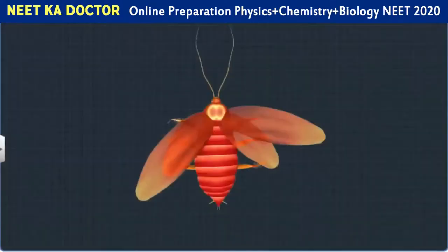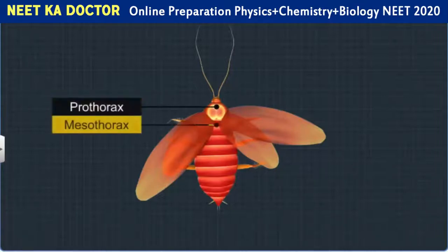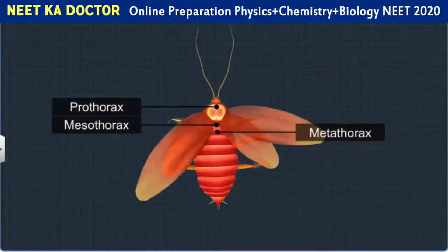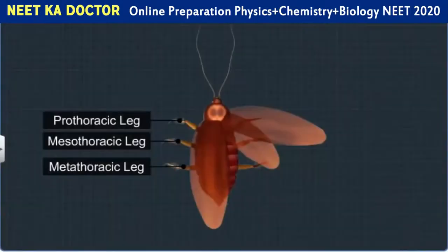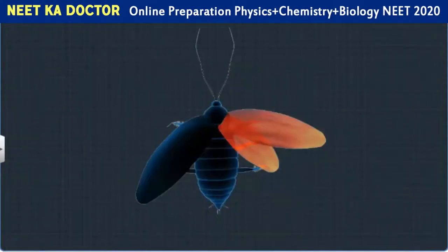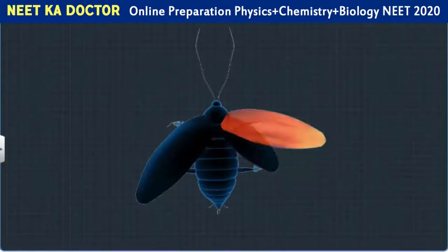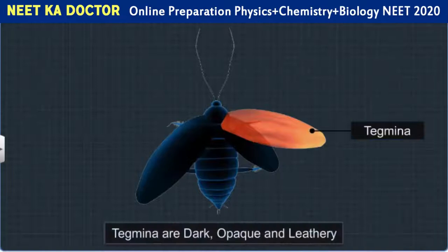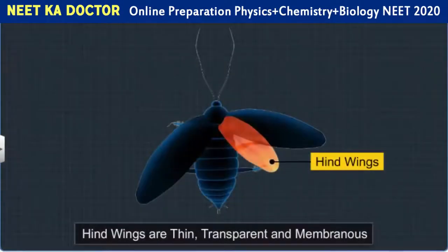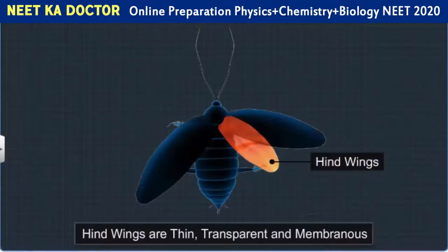Following the head is the thorax, which consists of three segments: prothorax, mesothorax and metathorax. Each thoracic segment bears a pair of long, jointed legs. Moreover, the mesothorax and metathorax bear a pair of wings. The mesothoracic wings or the forewings are called tegmina. These wings are dark, opaque and leathery and cover the hind wings at rest, while the hind wings are thin, transparent and membranous and are used in flight.